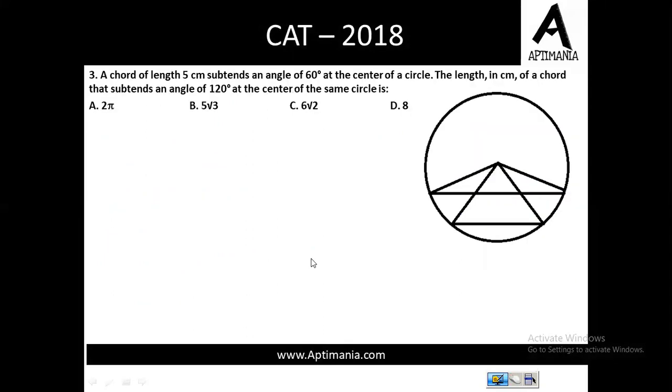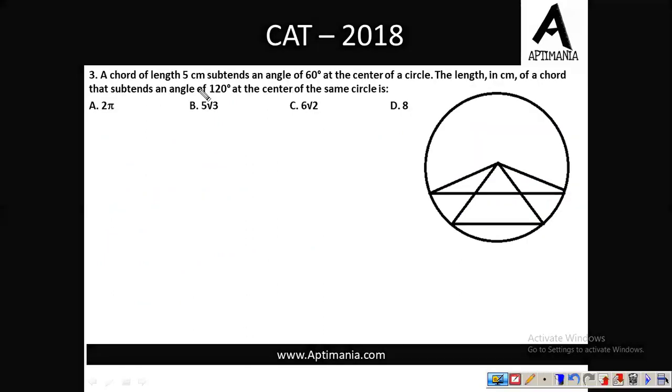Let's go for the next question. Question number three. A chord of length 5 centimeter subtends an angle 60 degrees at the center. So, it's a chord of length 5 centimeter and this angle is 60 degrees. In case, if this angle is 60 degrees, these two angles will also be of 60 degrees. So, it means it will be equilateral triangle. And if it is equilateral triangle, then your radius will be 5 centimeter.